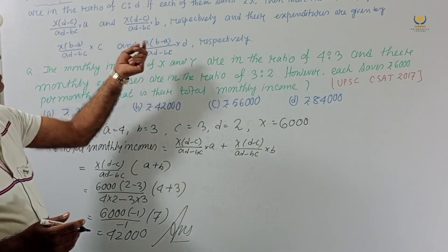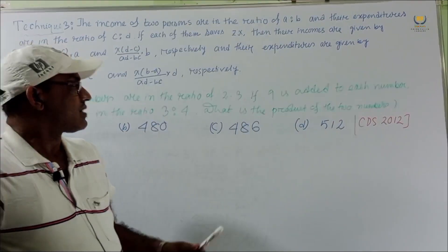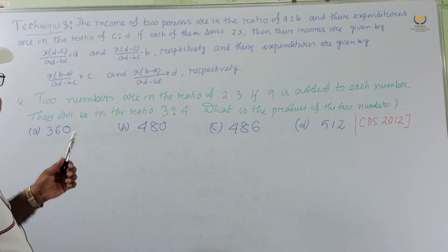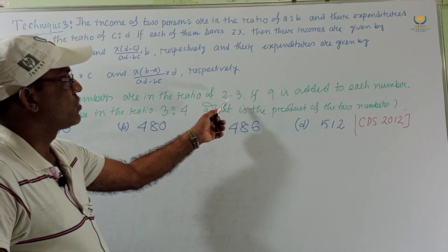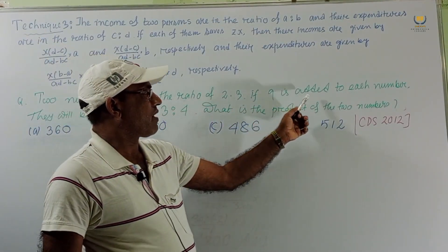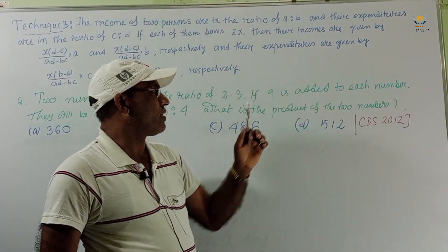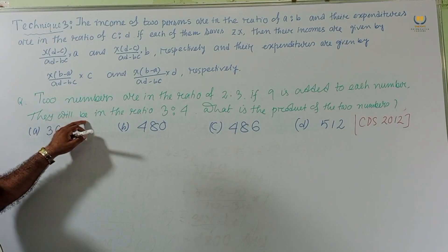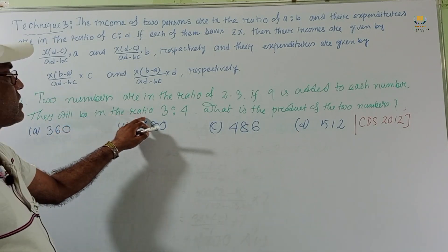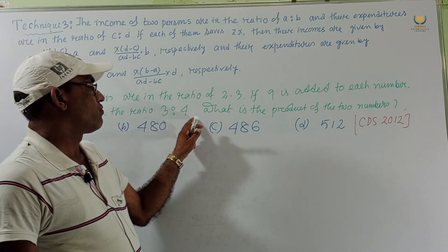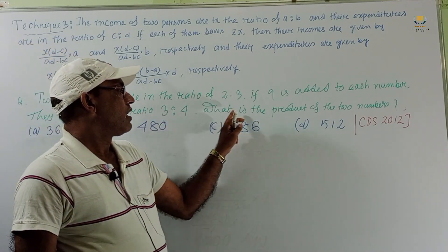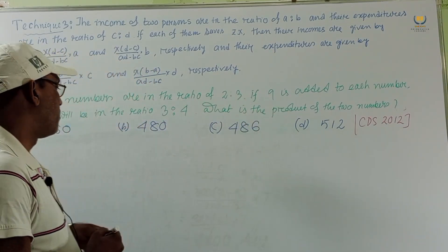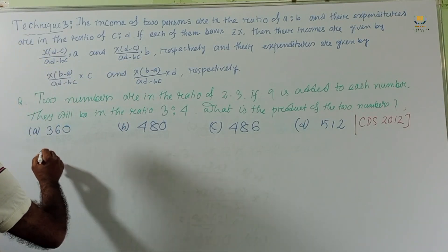Now consider this problem: two numbers are in the ratio 2:3. If 9 is added to each number, they will be in the ratio 3:4. What is the product of the two numbers?